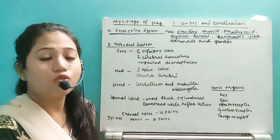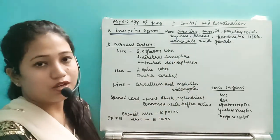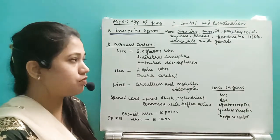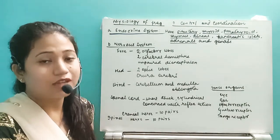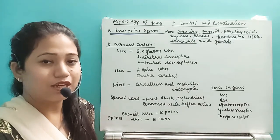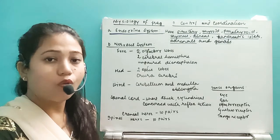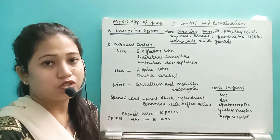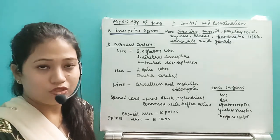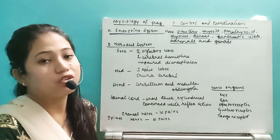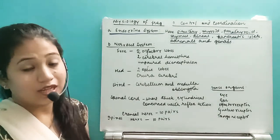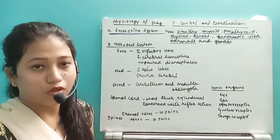Next are the pancreatic islets, which release hormones like insulin and glucagon to maintain glucose metabolism. Next are the adrenals, which release hormones maintaining the 3F situation — fight, fright, and flight — maintained by the release of adrenaline and noradrenaline by the adrenal gland. The last one is the gonads: the male gonad is the testis and the female gonad is the ovary, which release hormones that help in maturation and performance of the gametes. So the gonads act as endocrine glands as well as the chief site for development and formation of gametes.